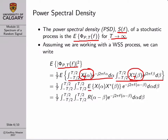We can recognize that the expected value of a stochastic process multiplied by its conjugate is just the autocorrelation of that signal. Assuming we're dealing with a wide-sense stationary process, we can write the autocorrelation as a function of just the difference between our time sample points alpha and beta. What we end up with is a double integral with respect to alpha and beta where both the autocorrelation function and the exponential are functions of alpha minus beta—making this a good candidate for a variable substitution to simplify the integral.